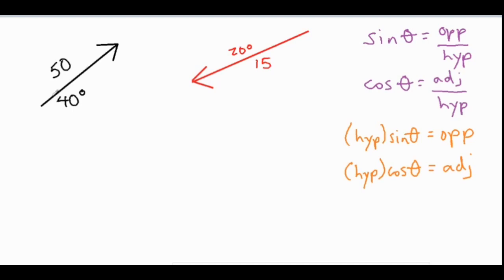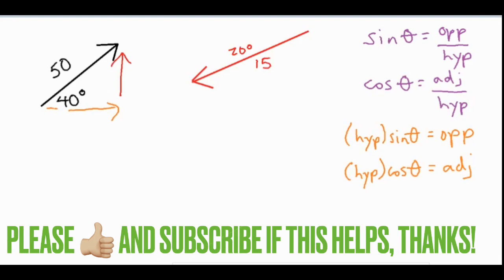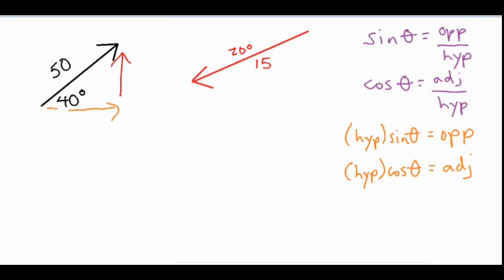Basically what you have is an angled component — this angled component would be 50 — and what you're going to do is create a horizontal and vertical component, forming a 90 degree angle with those so that you always have a right triangle. With those two components we have an adjacent side, which is our orange vector, and then our opposite side, which is our red vector.